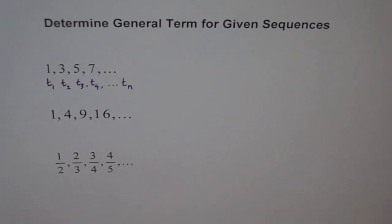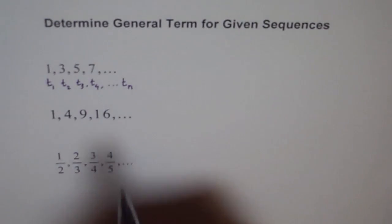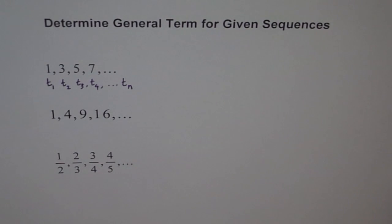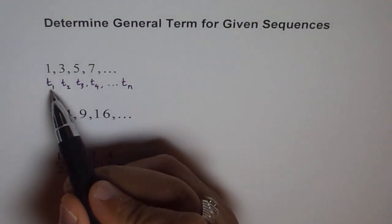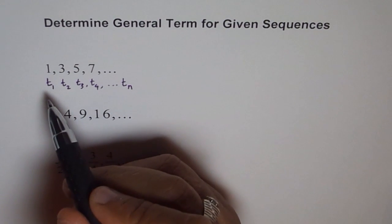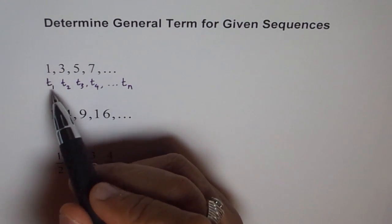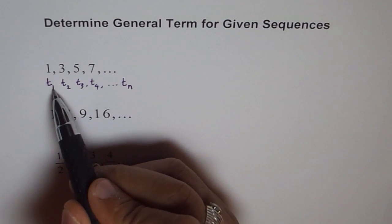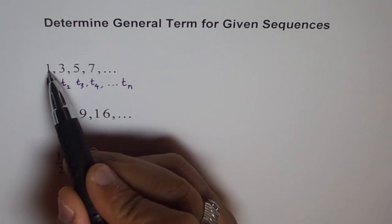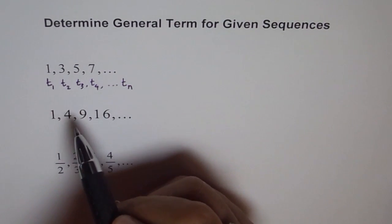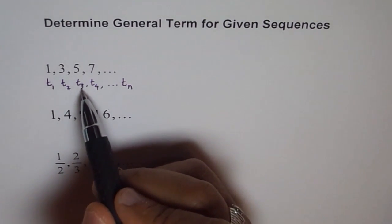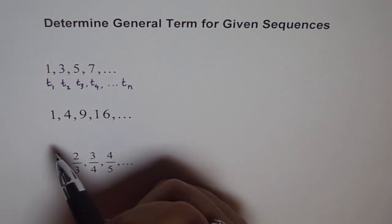The question before us is to find the value of Tn. How can I find Tn? That could be found by studying the pattern. We relate term number with term value. Then it is easy for us to find the relation. How is T1 related to the value of T1? How is T2 related to the value of T2? How is T3 related to the value of T3?